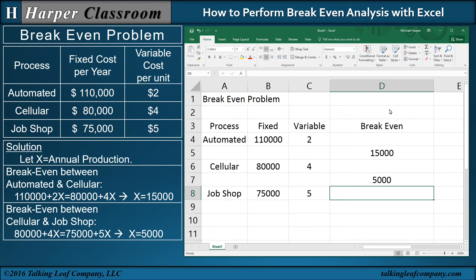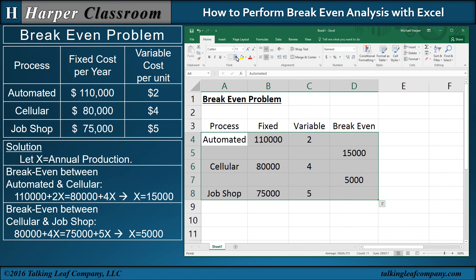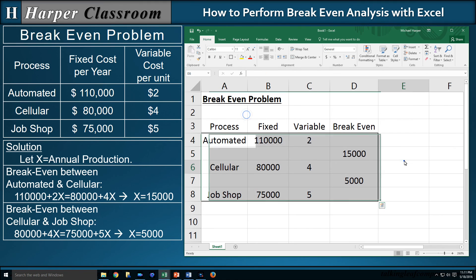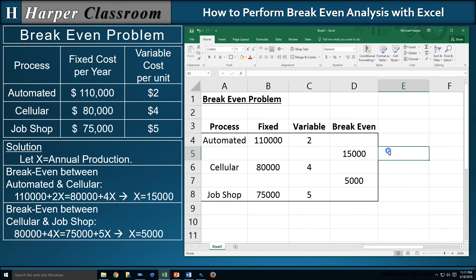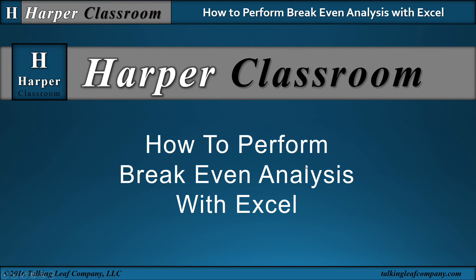If I want to reduce the view, I can move it or double-click to automatically scale it. So here I have my breakeven problem. I can click to make the title bold and underlined, format it with borders, and do all kinds of formatting now that I have my values. That ends the how-to on performing breakeven analysis with Excel. I hope this helps — thanks for watching.